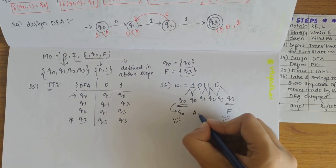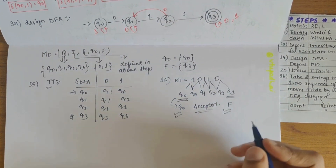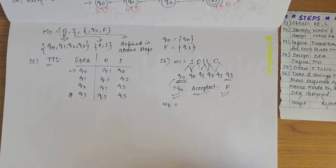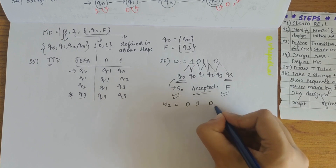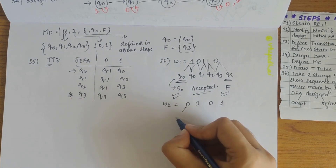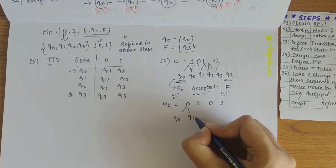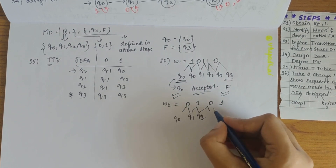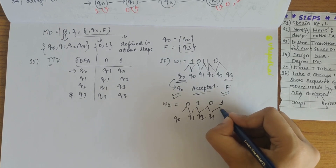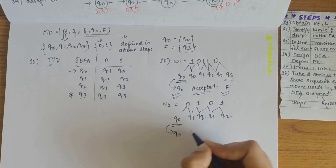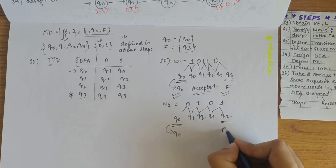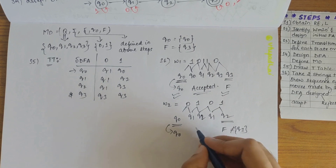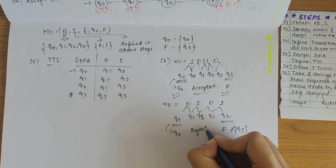For the second string W2 = 0101: Q0 on 0 gives Q1, Q1 on 1 gives Q2, Q2 on 0 gives Q1, Q1 on 1 gives Q2. The start state is Q0, but the final state reached is Q2, which is not Q3. Since Q2 does not belong to F, this string is rejected.